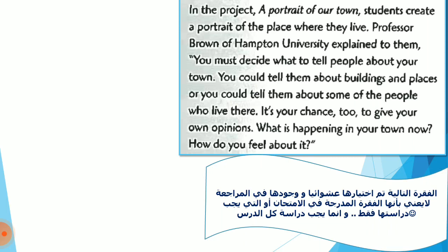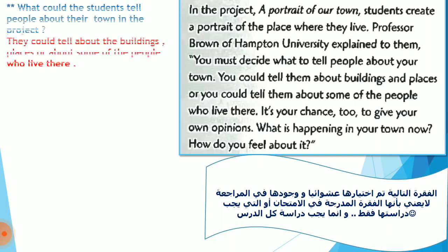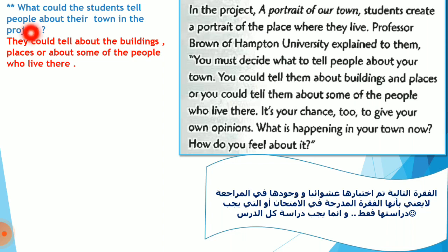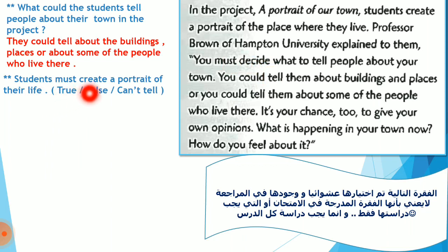Now let's start with number one. The question is: what could the student tell people about their town and the project? They could tell about the buildings, the places, or about some people who live there. Now, students must create a portrait of their life — after reading the paragraph, you will see that this is a false sentence.